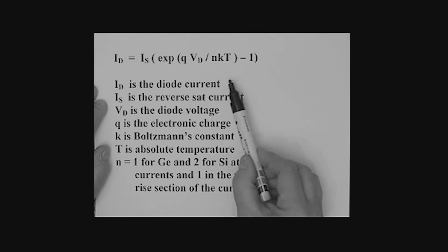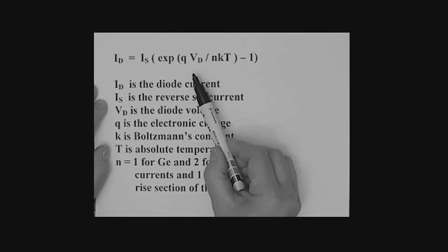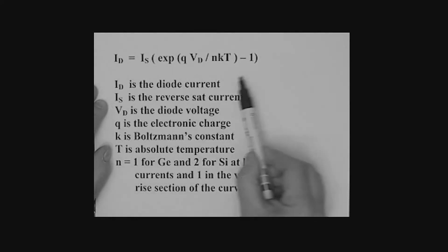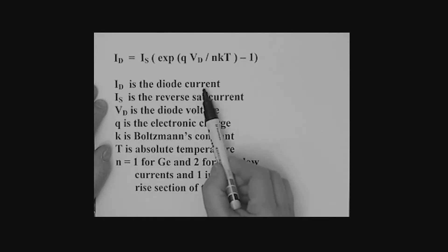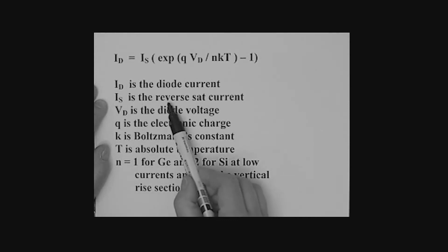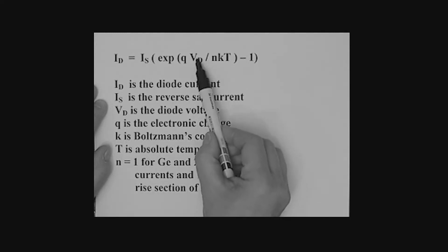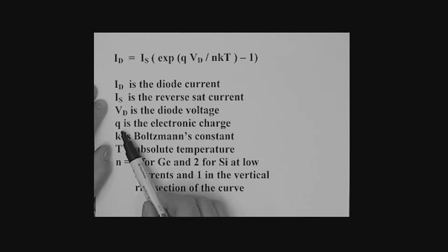We're not going to have a big play on that equation. I just want you to be aware that the characteristic of a diode in the forward direction is an exponential curve. Even this is a model for the diode and is not strictly accurate. Let's run through this. ID is the diode current. IS is the reverse saturation current. VD is the voltage across the diode. Q is the electronic charge. K is Boltzmann's constant. T is temperature measured on an absolute scale.